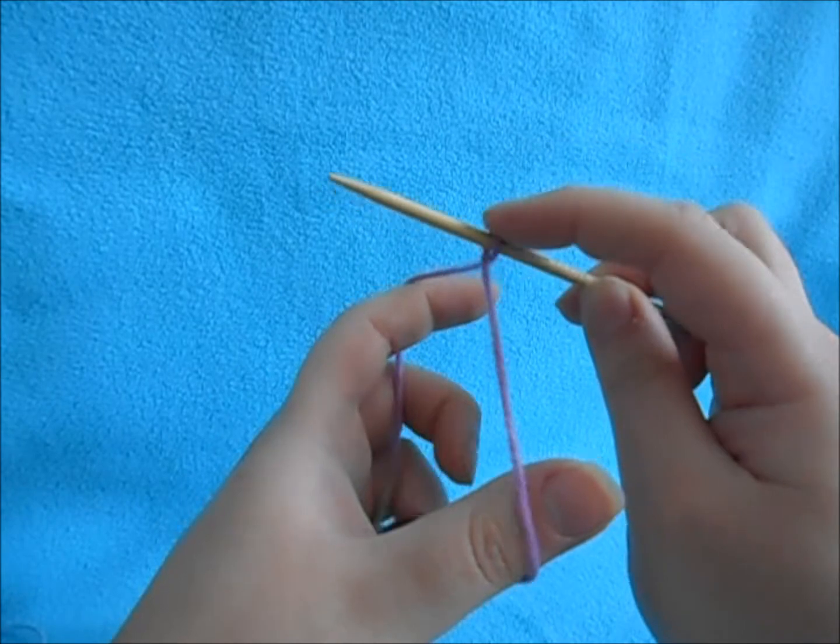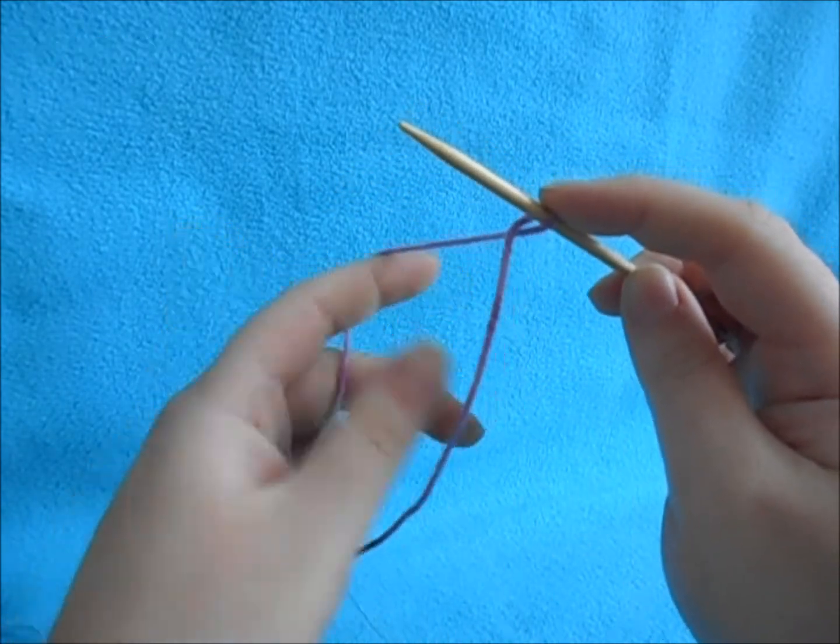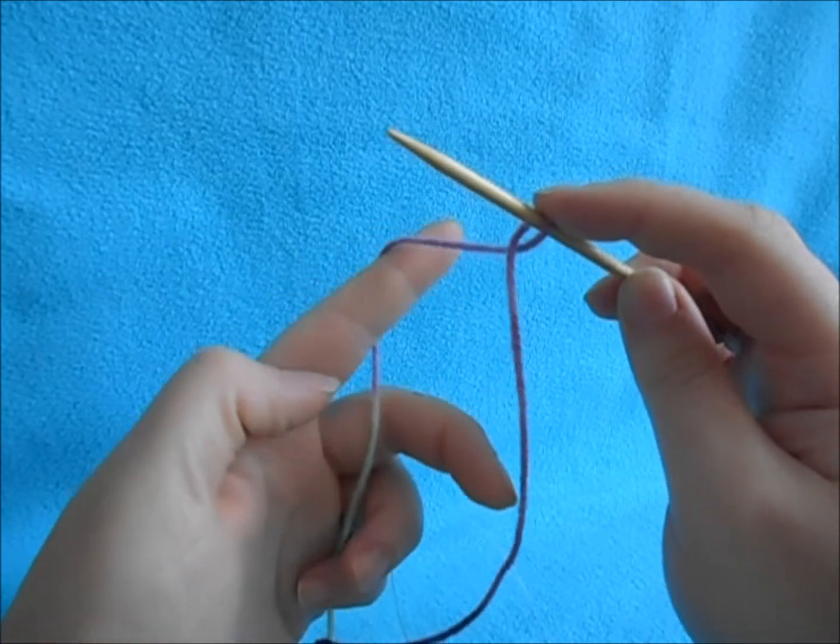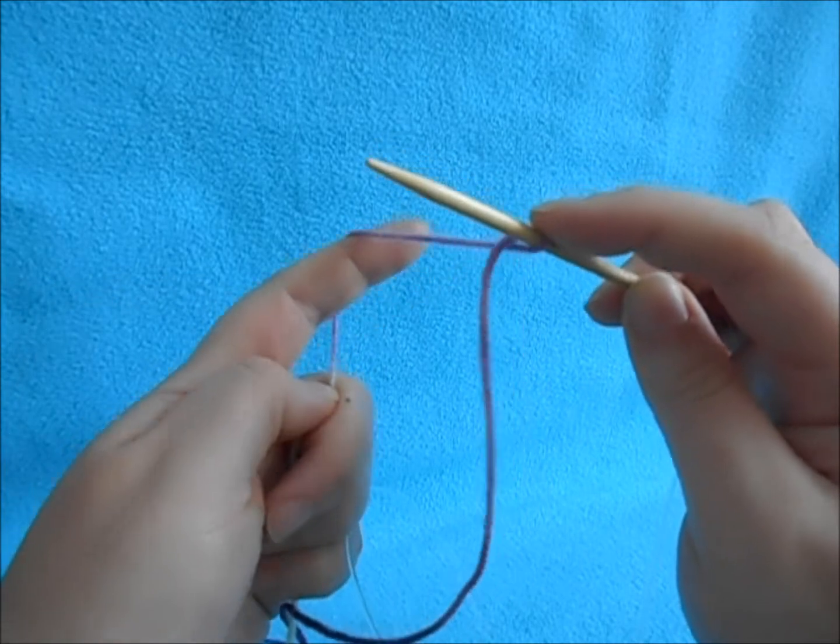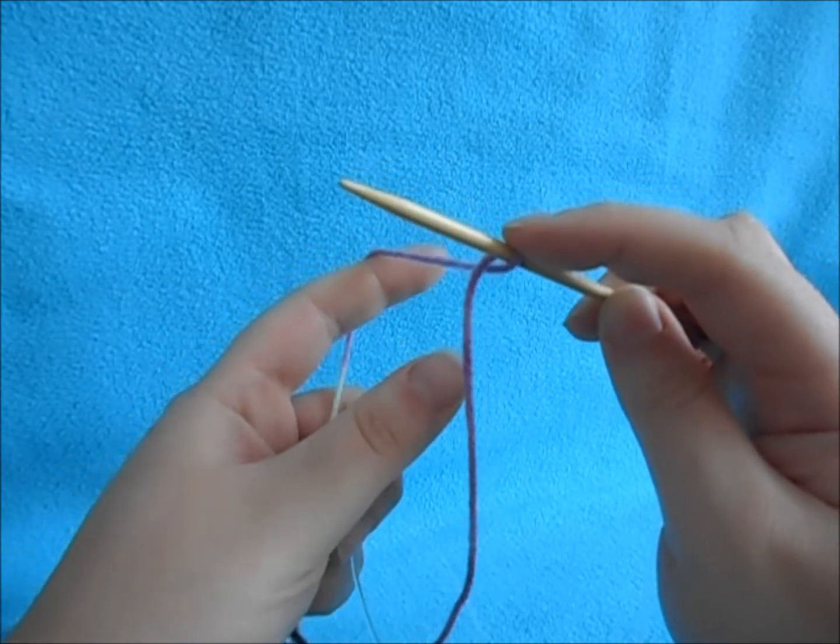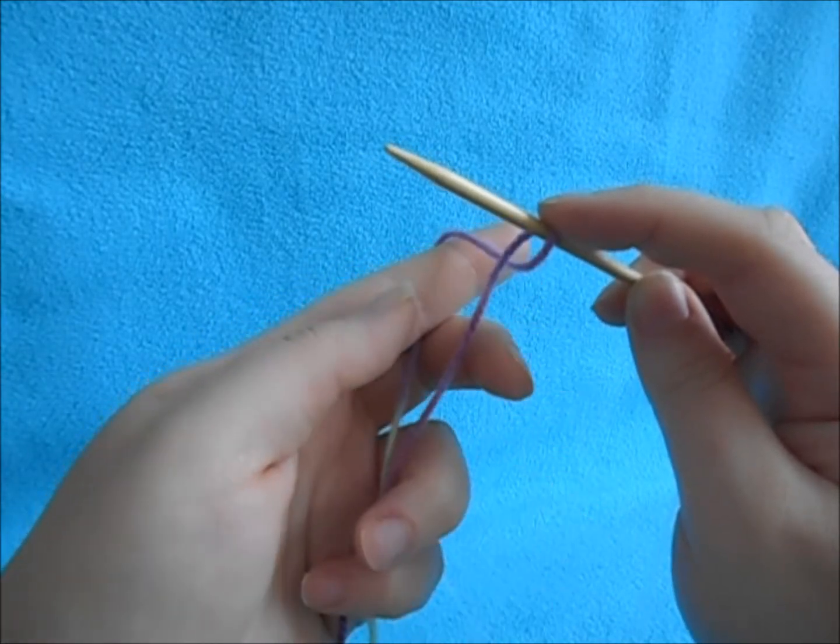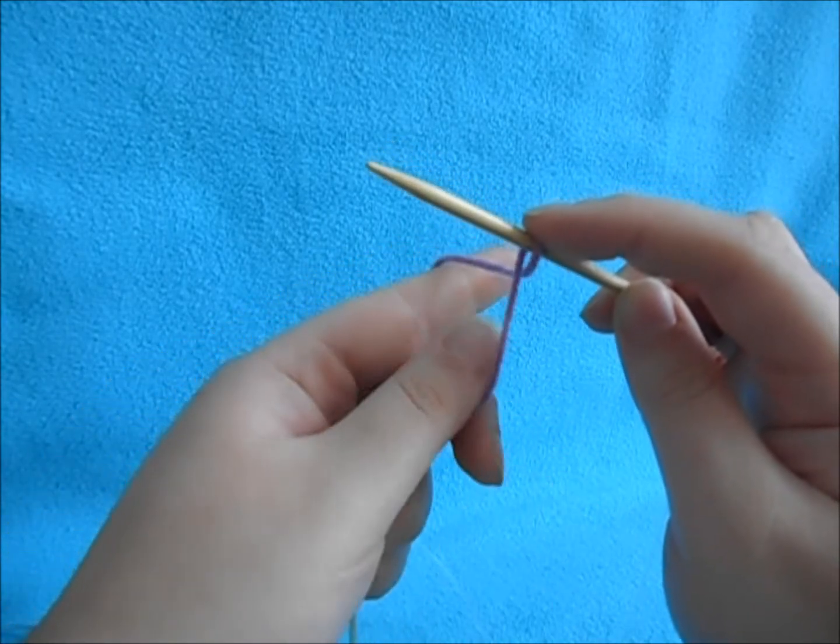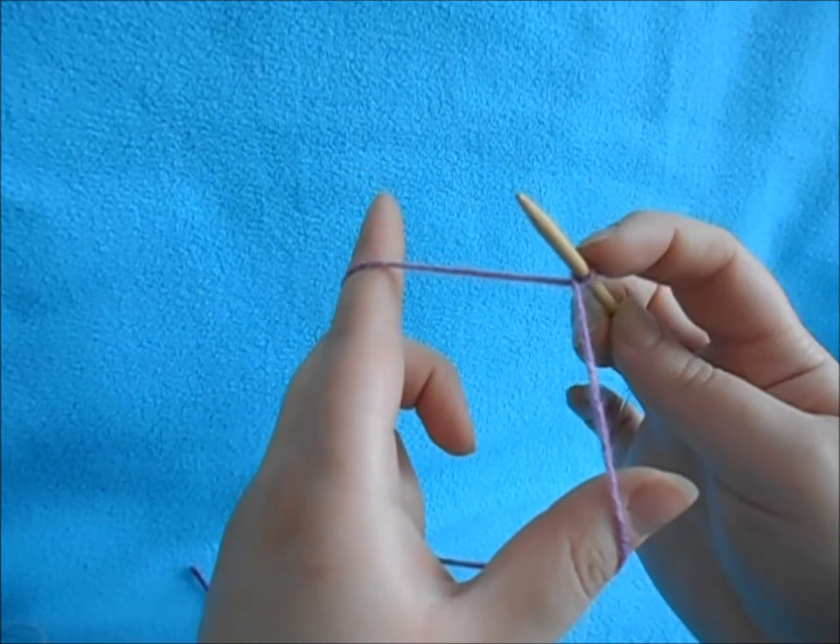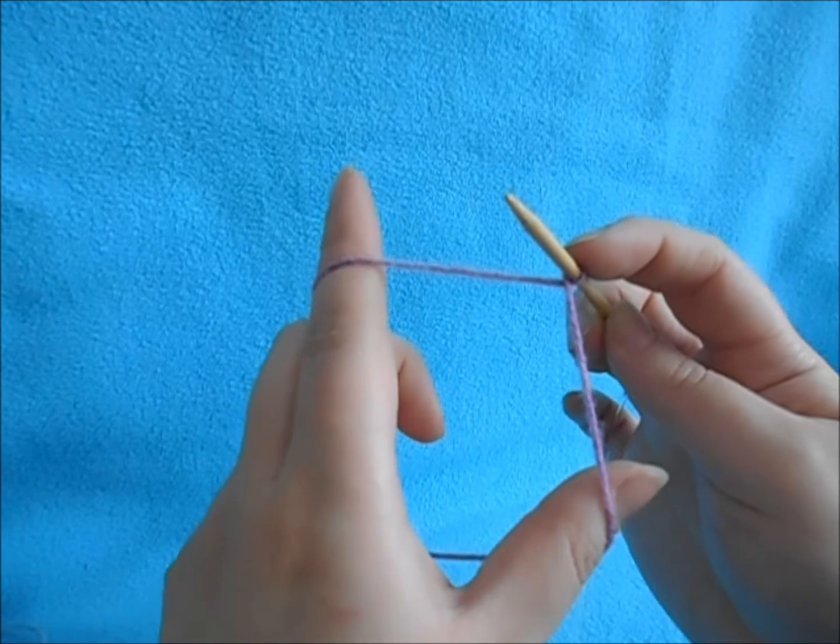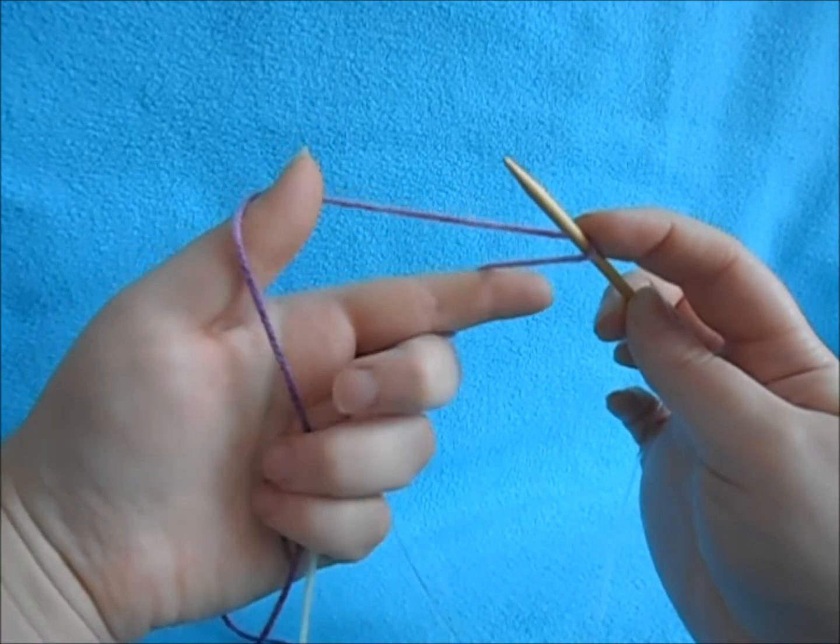So once you either have your loop like this or your slip stitch, you're going to put the ball yarn over your index finger. So you just gather the rest with your three, wrap it around your index finger. Then you're going to also grab the tail from the tail yarn and slide it over your thumb. So you should be holding the slip knot up here on your needle, wrapped around your finger, and then gathered down in the palm of your hand.